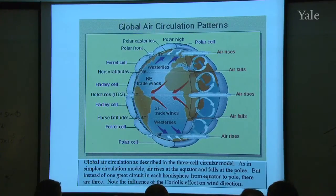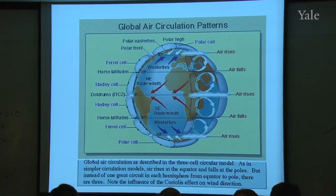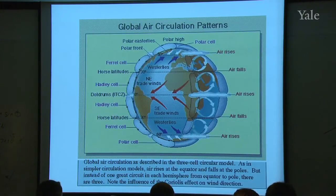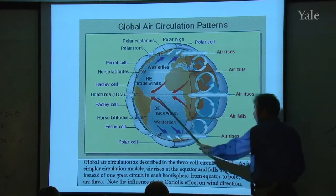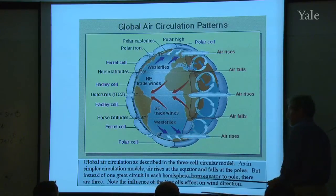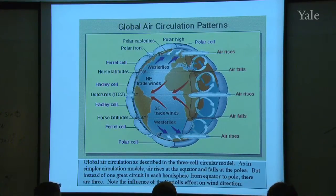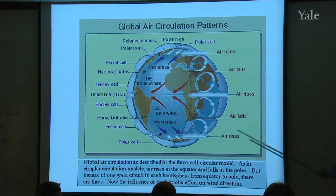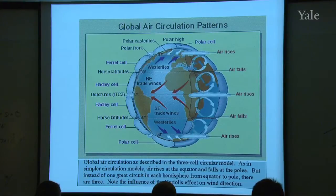The nature of that circulation becomes rather complicated because of the spherical geometry of the Earth, the fact that the Earth is spinning — which distributes the solar heat pretty well zonally around the equator — and the other big thing is the Coriolis force. We're going to be talking about Coriolis force today in some detail, but for right now I'll just mention it as one of the reasons it gives rise to this three-cell rather complex structure.